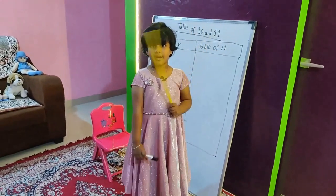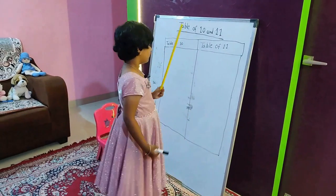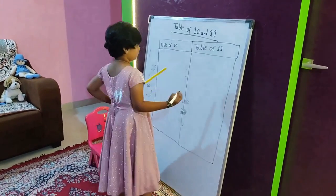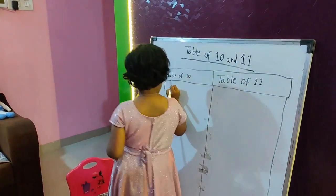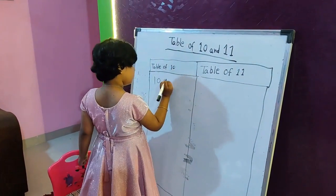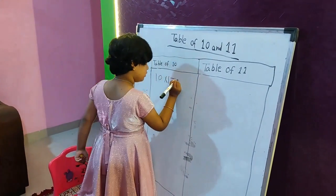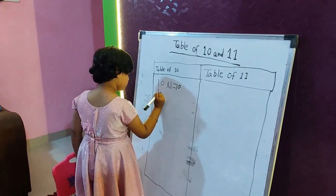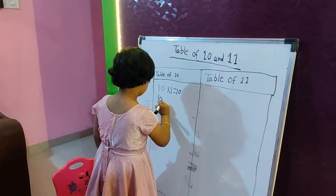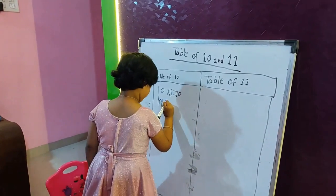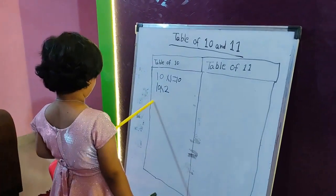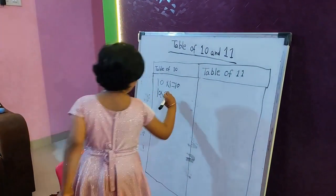Hi, my name is RC and today we will learn the table of ten and table of eleven. Let's start. Ten multiply one equals ten, one times ten equals ten. Ten times two equals twenty.